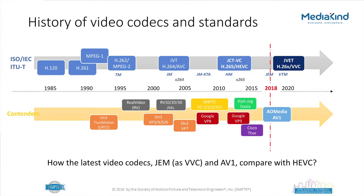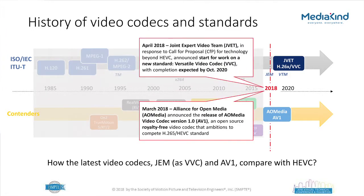2018 was a rich year for codec activity. In April 2018, the Joint Video Experts Team — a joint working group from MPEG and VCEG — announced work on Versatile Video Codec (VVC), with completion expected by October 2020. In March 2018, the Alliance for Open Media announced AV1, an open-source royalty-free codec aiming to compete with HEVC. The motivation of this work is to compare these latest codecs against HEVC.